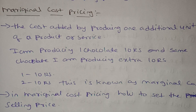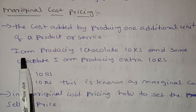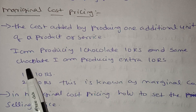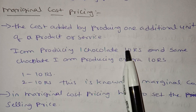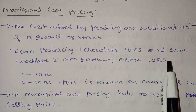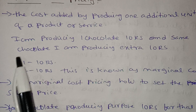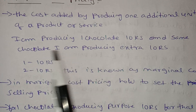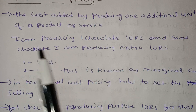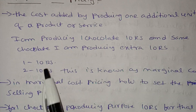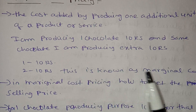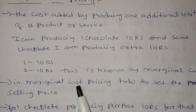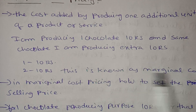For example, I am producing one chocolate for 10 rupees. For the additional unit — the extra chocolate — the cost is 1 rupee extra. So the additional unit costs 1 rupee more on top of the base 10 rupees.